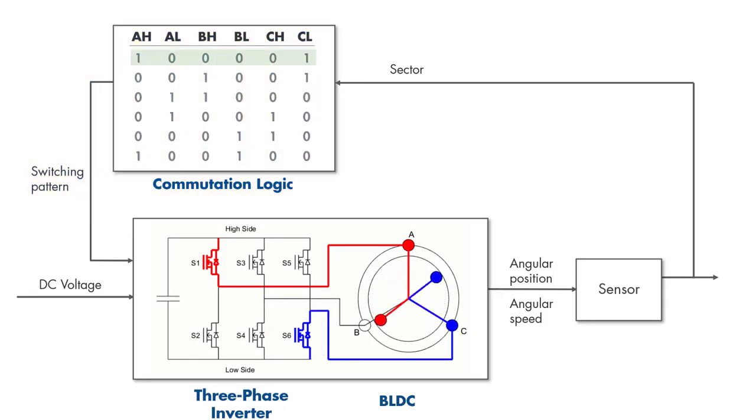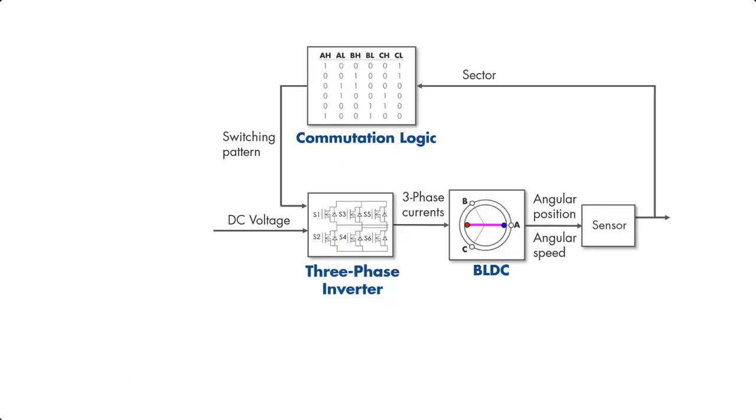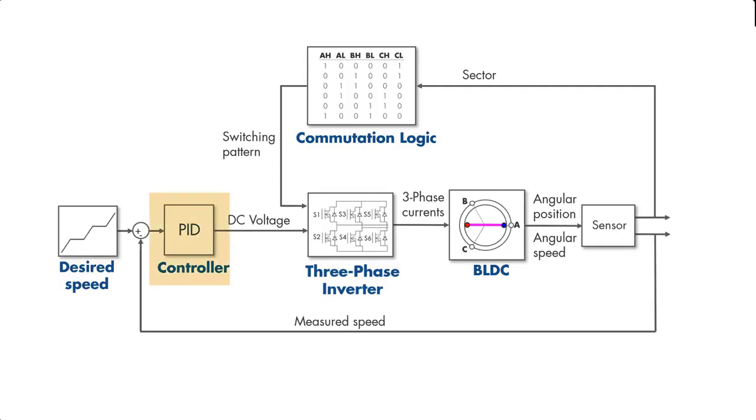Our next goal is to make the motor spin at different speeds. Currently, we input a constant DC voltage to the inverter, which leads to constant speed as we discussed before. We can adjust this voltage by closing the loop with a suitable controller. Based on the difference between the desired and measured speed, the controller will adjust the voltage to bring the motor speed close to the desired value.